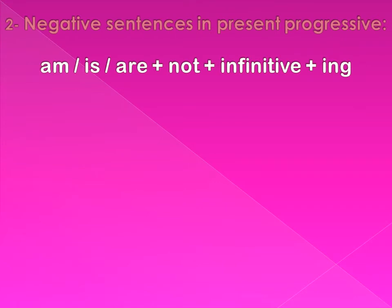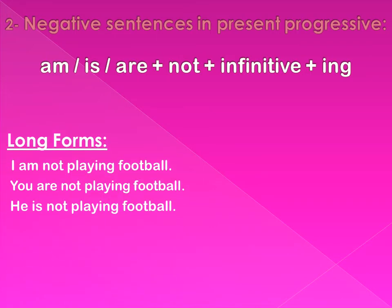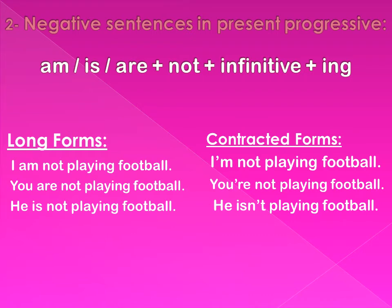The second form is the negative sentence. In the present progressive we put the verb 'to be' — am, is, or are — plus 'not,' plus the infinitive plus -ing. Examples of long forms: I am not playing football, you are not playing football, he is not playing football. Examples of contracted forms: I'm not playing football, you aren't playing football, he isn't playing football.